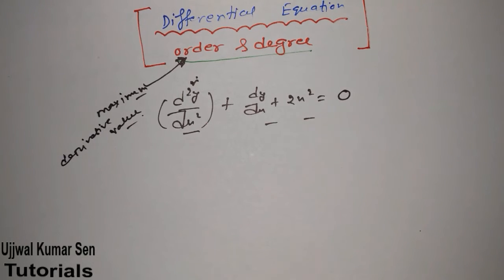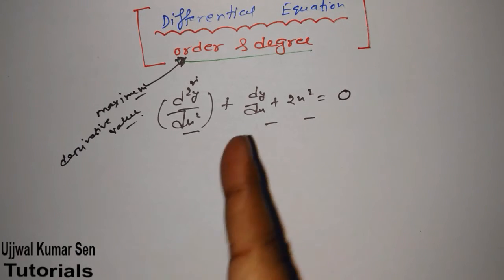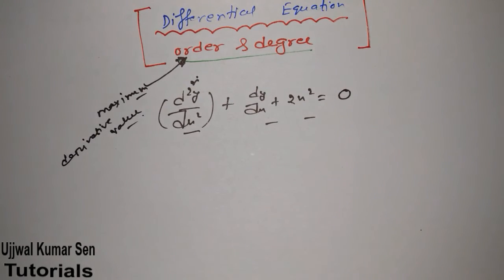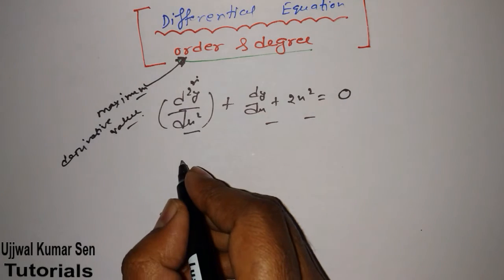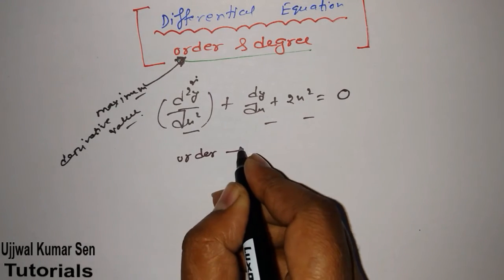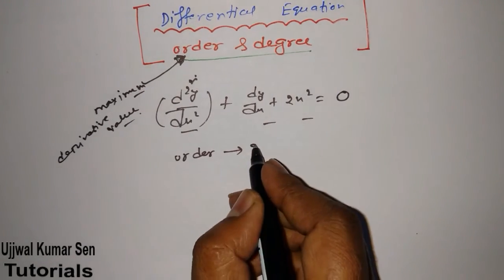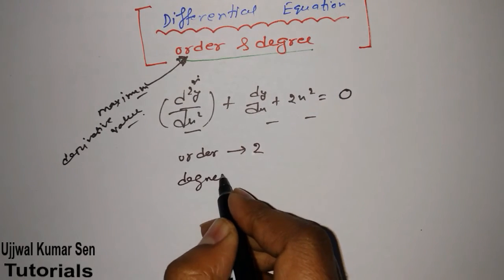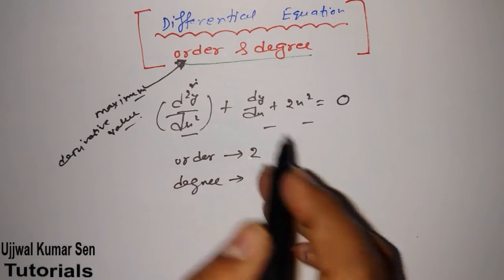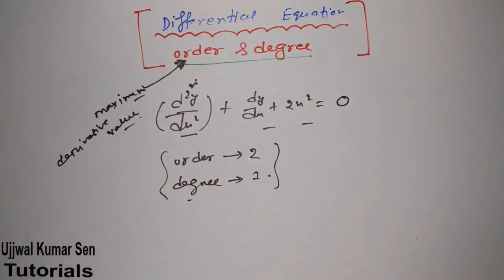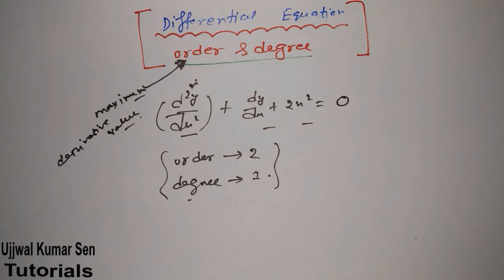Then we look at the degree of that maximum derivative term only, not the others. In this simple example, if I ask the order of this equation, that is two. And the degree — since there is no square or other power on that derivative term — is one. This is how you find order and degree of any problem.